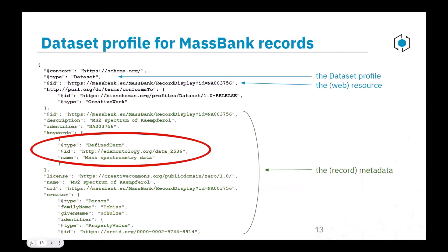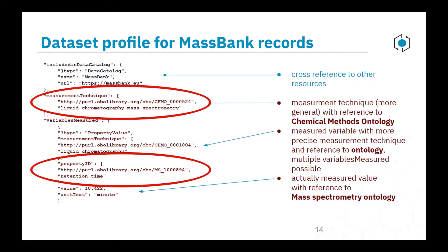This allows us to strike connections between them. Here we have the mock-up of how we aim to include defined terms — for example, that this is about mass spectrometry data. The measurement technique is also coming from the ontology, and properties or variables that are measured, like retention time, are also coming from an ontology. We learned over the last weeks that this can already be encoded in the existing dataset schema, so we wouldn't need a new specific profile for that. We are currently soliciting more examples and mock-ups, one of which will be the NMR archive.